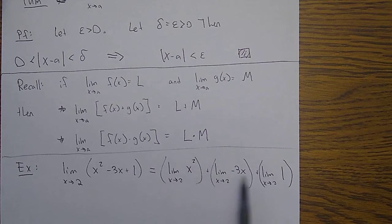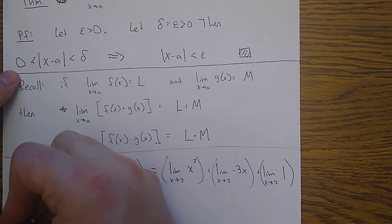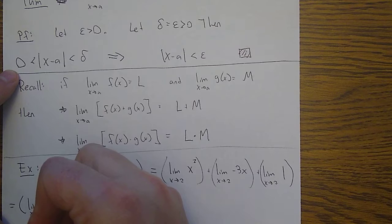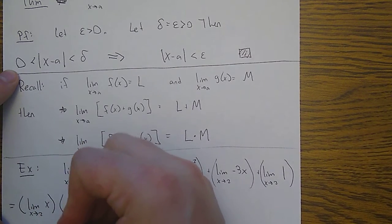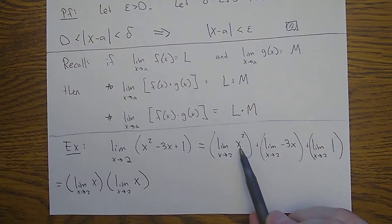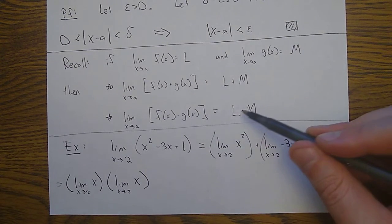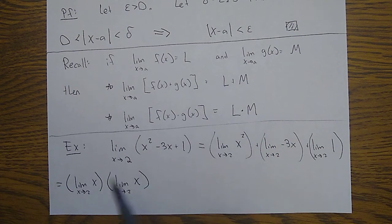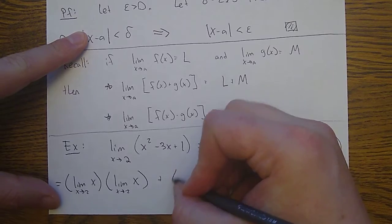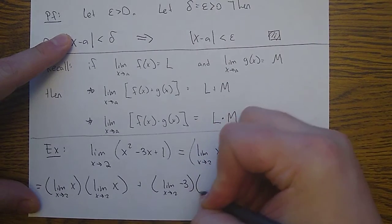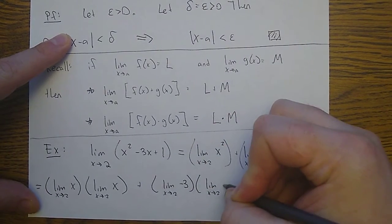Now I'm going to break these things up even more — x squared is just x times x, and I know I can break up multiplication. If I'm doing a function times another function like x times x, according to the product rule I can do the limit of the first function times the limit of the second function. So I do the limit of x times the limit of x. I can do the same thing for the negative 3x term: limit as x goes to 2 of negative 3, times the limit as x goes to 2 of x.